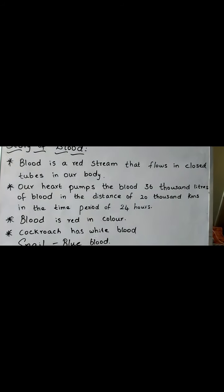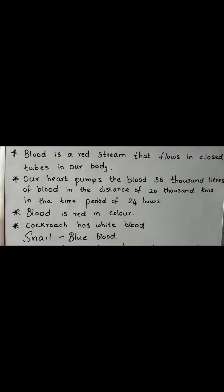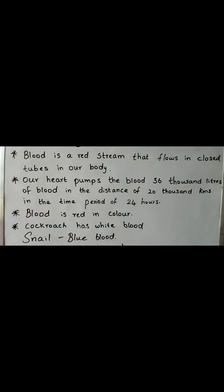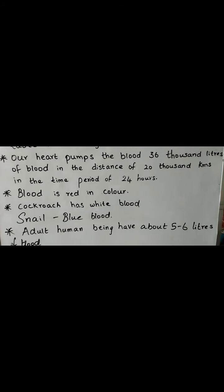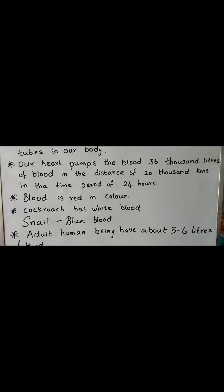We have learned about different types of connective tissues: tendons, ligaments, cartilage, areolar tissue, and adipose tissue. Now we are going to discuss about blood in detail — the types of blood cells, how to detect the blood group, and the procedure to determine the blood group type. Blood is a red stream that flows in closed tubes in our body. Our heart pumps 36,000 liters of blood over a distance of 20,000 kilometers in a time period of 24 hours.